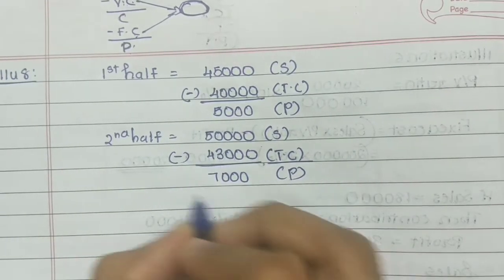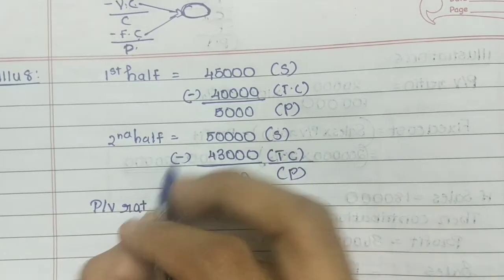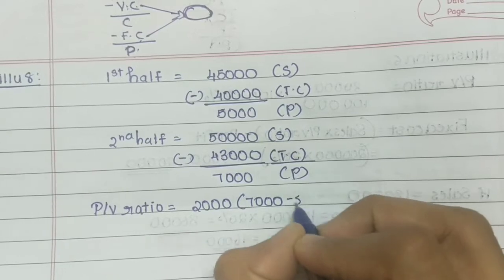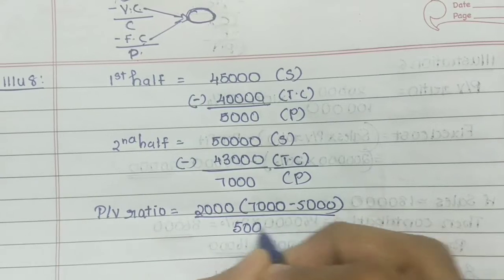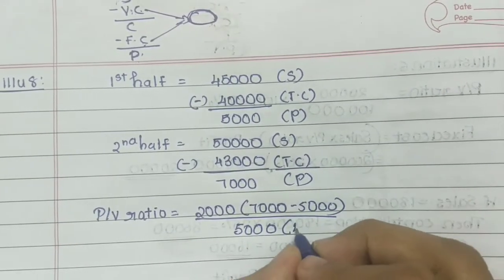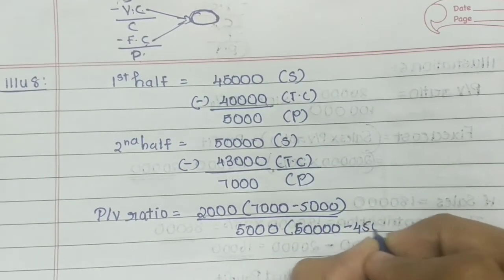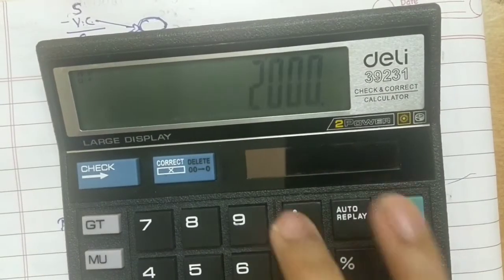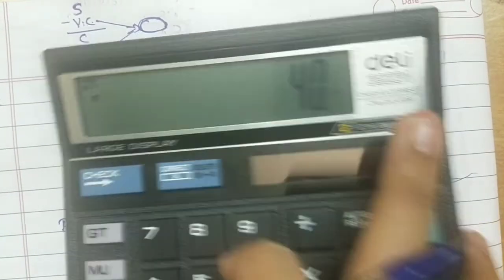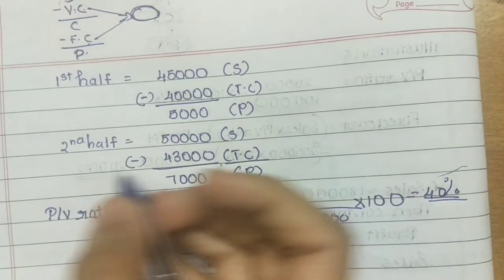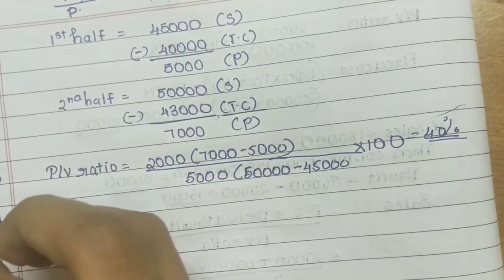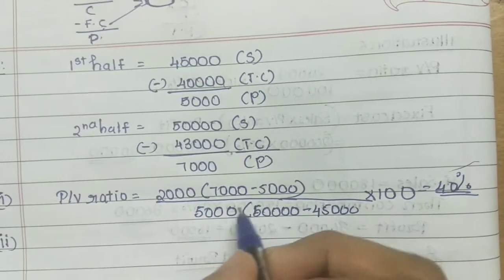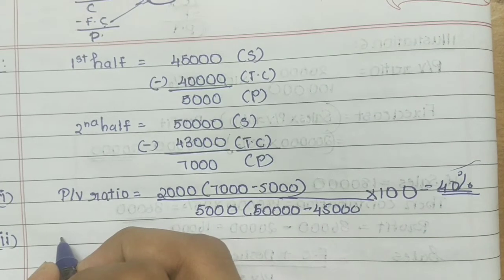The change in profit is $7,000 minus $5,000 equals $2,000. The change in sales is $50,000 minus $45,000 equals $5,000. So the PV ratio equals change in profit divided by change in sales, which is $2,000 divided by $5,000 into 100, giving us 40%.